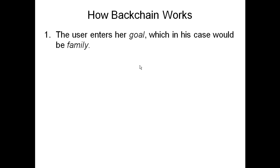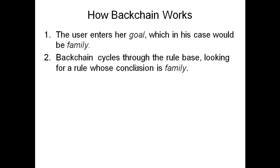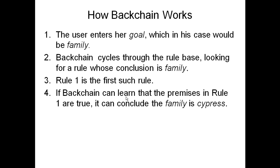I called the backward chaining algorithm 'backchain' and here's how it works. The user first enters a goal, which in this case is 'family' — the user wants to know the family of the plant. Backchain cycles through the rules looking for a rule whose conclusion is 'family.' The very first rule concludes that family is cypress. So backchain uses that rule. If backchain can learn that the premises in rule one are true — that class is gymnosperm and leaf shape is scale-like — it can conclude that family is cypress.